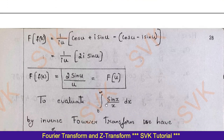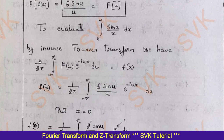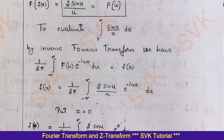Now to evaluate the integral from 0 to infinity of sin(x)/x dx. By the inverse Fourier transform, we have the standard formula: f(x) = (1/2π) times the integral from minus infinity to plus infinity of F(u) e^(-iux) du. Substitute F(u) = 2 sin(u)/u here, and put x equal to 0.